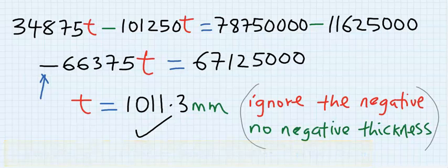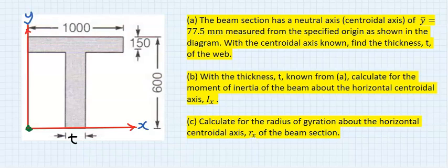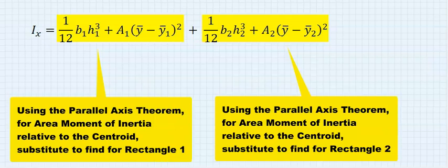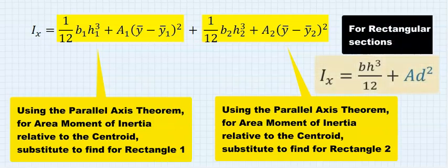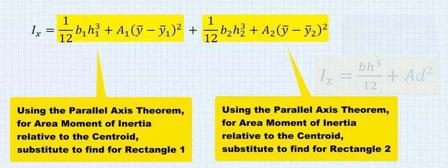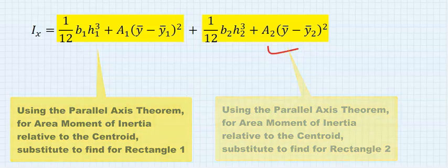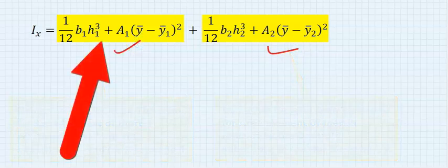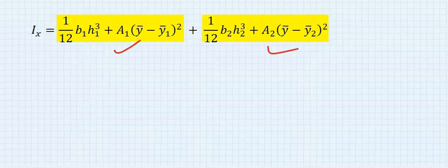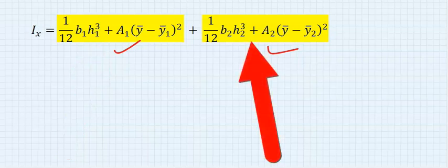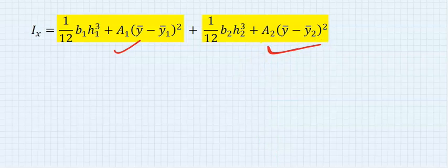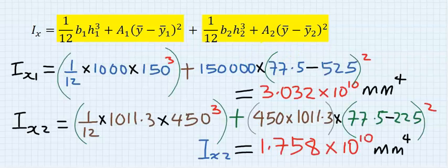Next, find the moment of inertia of the beam. The first step is to write out the formula for the area moment of inertia along the x-axis using the parallel axis theorem. This is the area moment of inertia for the first rectangle, and this is the area moment of inertia for the second rectangle. Substitute and solve carefully.